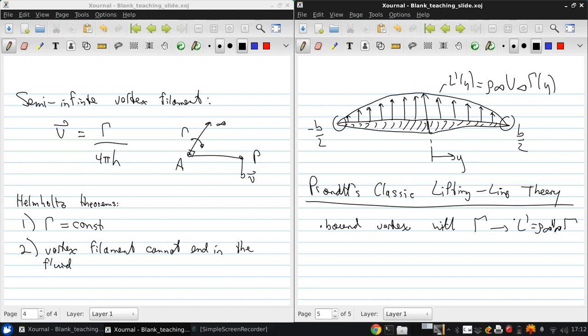The big leap we make here is that we're going to replace the finite wing of span B with a bound vortex from Y equals negative B over 2 to B over 2. To illustrate that graphically,